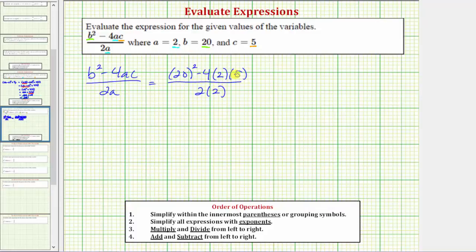Whenever we have an expression that's a fraction, or a rational expression, we simplify the numerator and denominator separately, then simplify the fraction or perform the division.